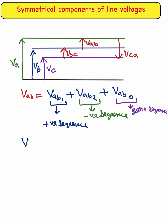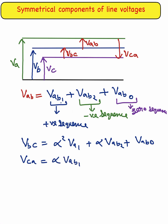Similarly, you can calculate Vbc: that is Vbc is equal to α² Vab1 plus α Vab2 plus Vab0. In the previous lecture we discussed how to calculate Va1, Va0, and Va2 for the symmetrical components of unsymmetrical phasors. So Vbc equals α² Vab1 plus α Vab2 plus Vab0.